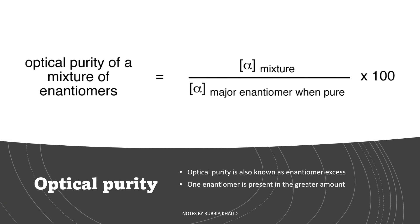Next, we have optical purity. Optical purity is also known as enantiomer excess. If one enantiomer is present in the greater amount, we will say that the amount of mixture which is in the large amount over the major enantiomer when pure times 100, so we will get the optical purity.